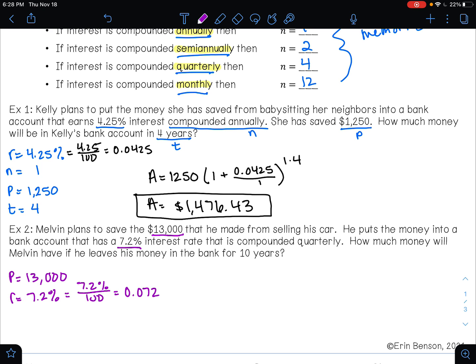It's going to be compounded quarterly. So when we're compounded quarterly, n is 4. And he's going to leave it in the bank for 10 years. So that's our time, t. So let's see what happens. Let's see how much money Melvin's going to have.